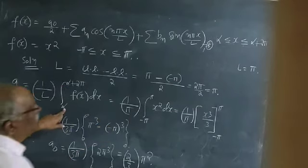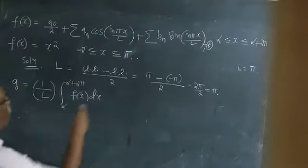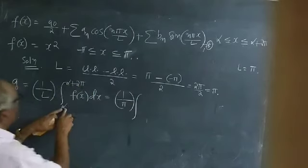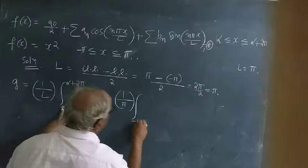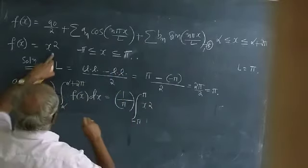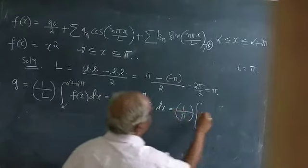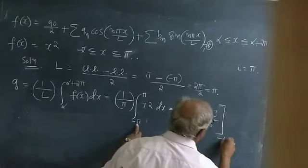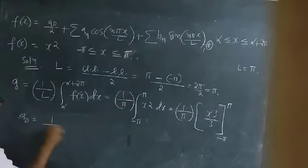So a₀ = (1/5) × integral. The limits alpha to alpha+2l correspond to the given interval in the problem, which is minus π to plus π. So a₀ = (1/π) × integral from -π to +π of x² dx. The integral of x² is x³/3. With limits from minus π to plus π.